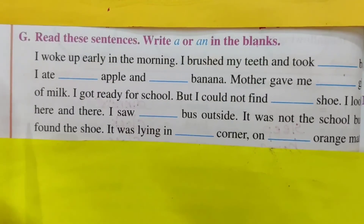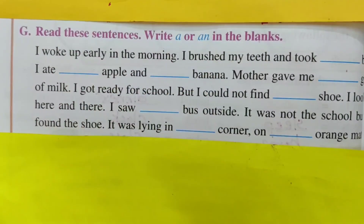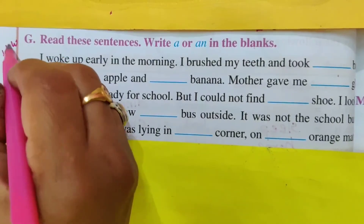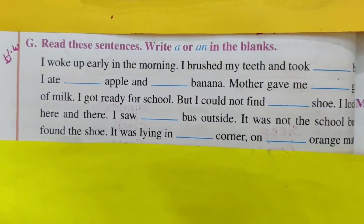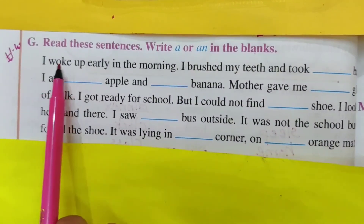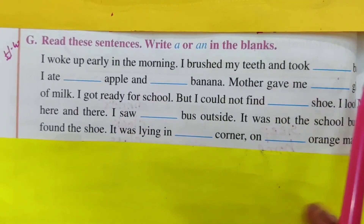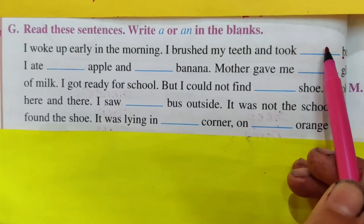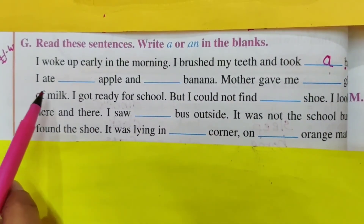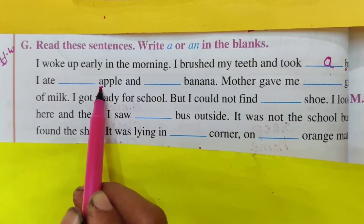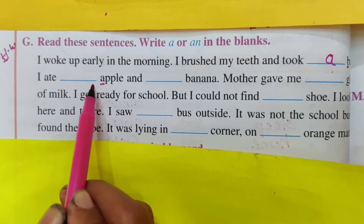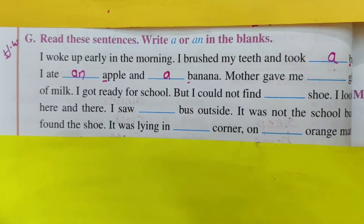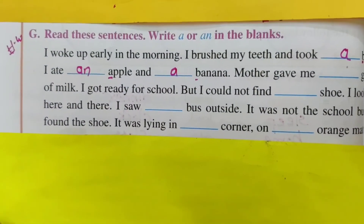Now see G-bit: 'Read these sentences. Write A or An in the blanks.' Here also he is asking you to write A or An. I am giving this as homework because I have already explained clearly. You must do it on your own, or take help from your parents. For example: 'I brushed my teeth and took dash bath.' Bath starts with B — B is a consonant, so write A. 'I ate dash apple.' Apple starts with A — A is a vowel, so write An. 'I ate an apple and A banana.' B is a consonant, so A. Complete the remaining ones on your own.